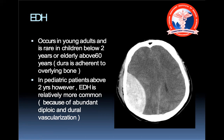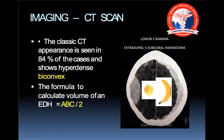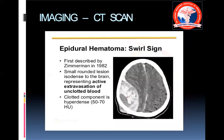In pediatric patients above two years, EDH is relatively more common because of abundant diploic and dural vascularization. On imaging, the classic CT appearance seen in 84% of cases shows a hyperdense, biconvex lesion. The formula to calculate EDH volume is ABC/2: A and B are two dimensions of the lesion, and C is derived from the number of CT scan cuts involved multiplied by slice thickness.